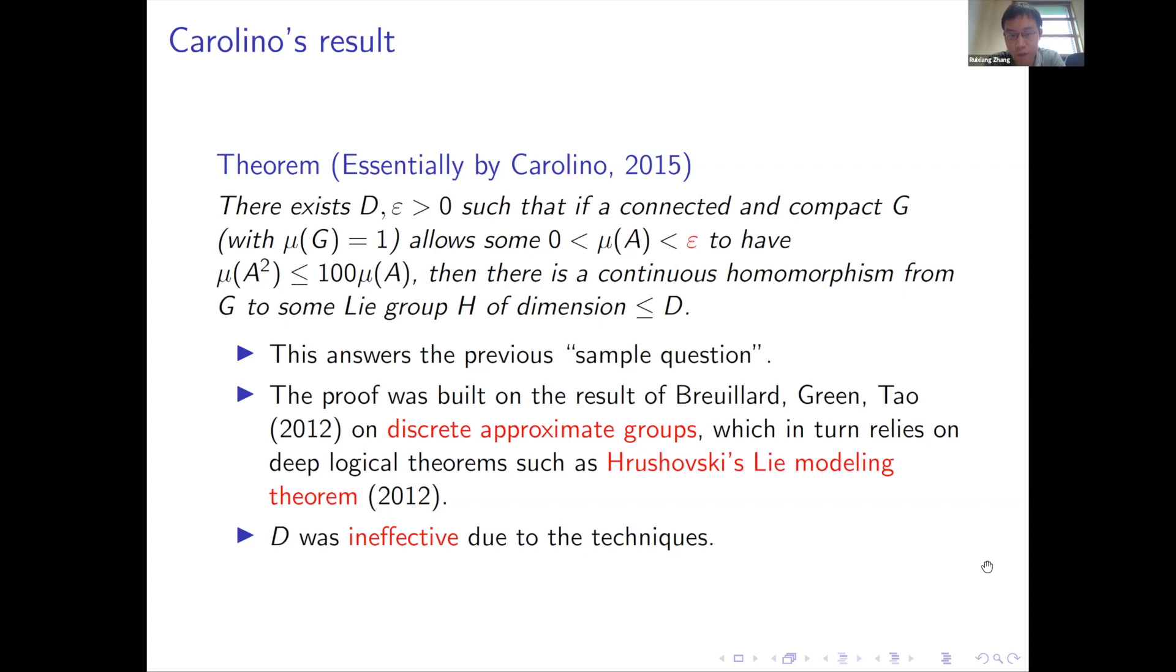So this is a very strong statement, saying that, for example, G cannot be SO(n) when n goes to infinity, for example. So this is a very strong claim, and it answers the previous sample question to an extent. So the proof was also using recently developed tools that was built on the result of Breuillard, Green, and Tao on discrete approximate groups, which in turn relies on some really deep model-theoretic theorems like Hrushovski's stabilizer theorem. So you'll see all of these are recent developments. And as you can probably imagine, because of this toolbox, the D in this result is ineffective, meaning that you know there is this D, but you couldn't, there's really no way to compute it, there's no way to know it. There's no way to know the dependence on 100, but you couldn't even determine it due to the techniques. So at this point, people couldn't determine this D yet.